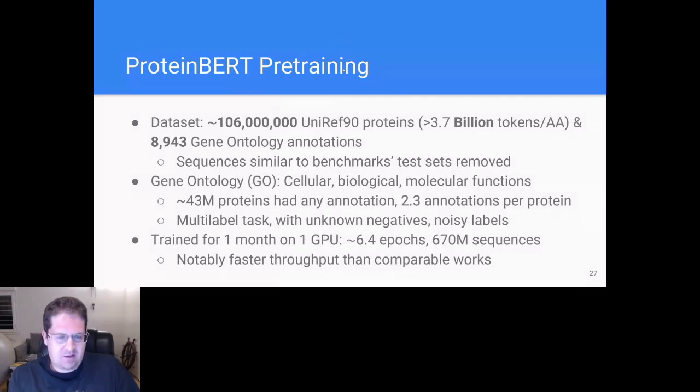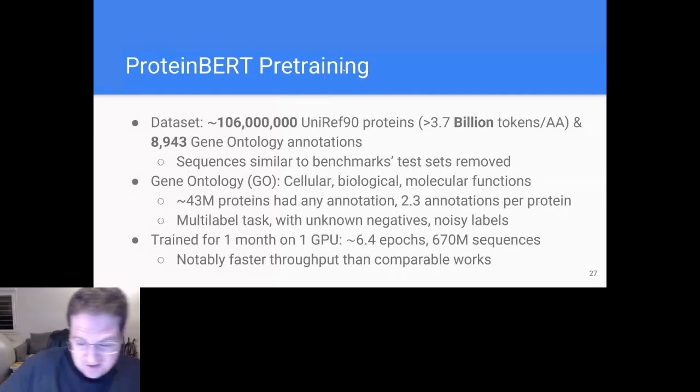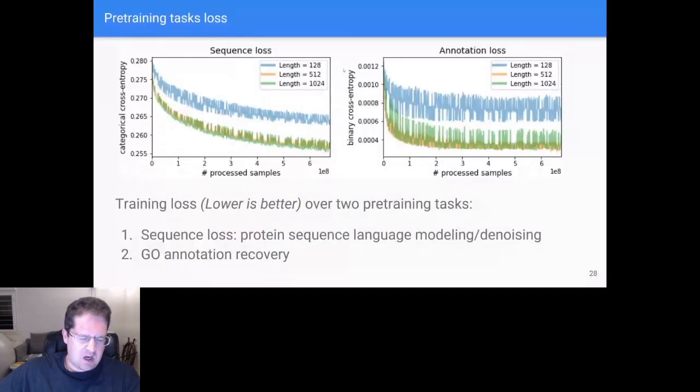In about three and a half weeks on this very small home GPU, like my GPU, we had enough time to crunch through 670 million sequences. This is massively faster than comparable works of classical transformers. It's about one to two orders of magnitude faster for training and inference. So we show how, by the way again, the model keeps getting better the more time you train it for. We show how it does better with longer sequences.